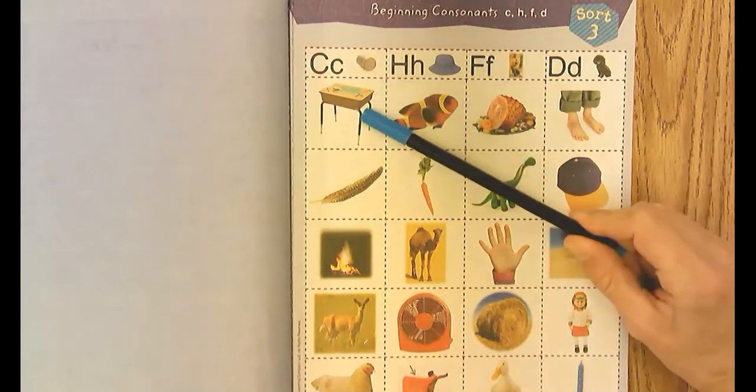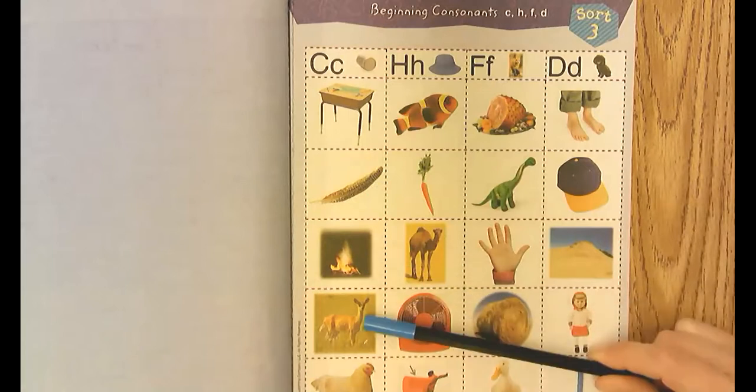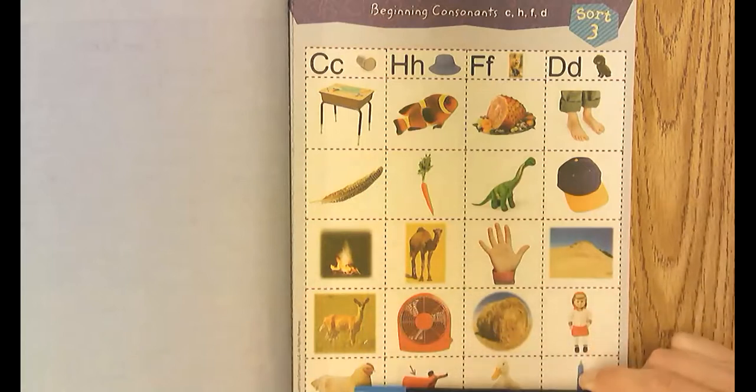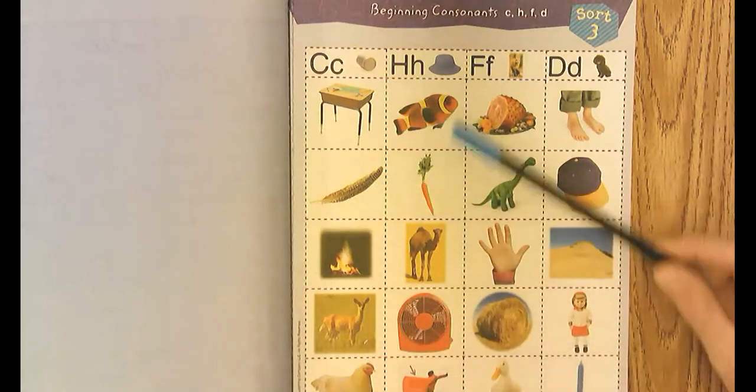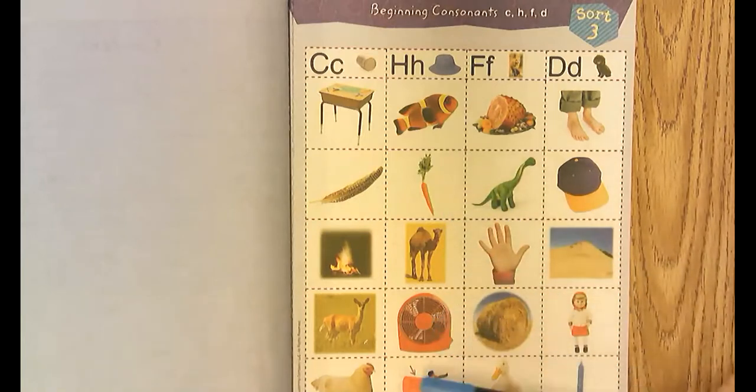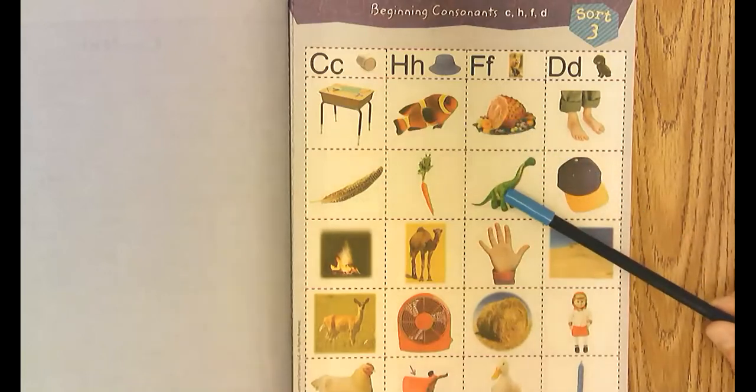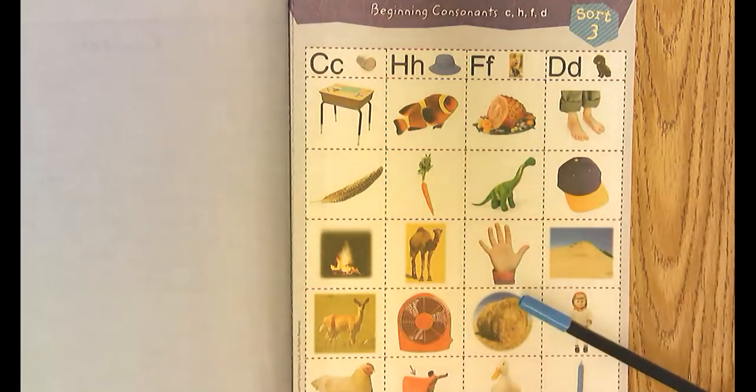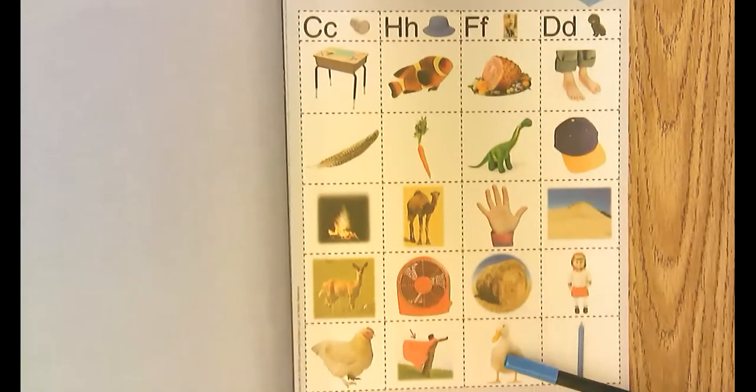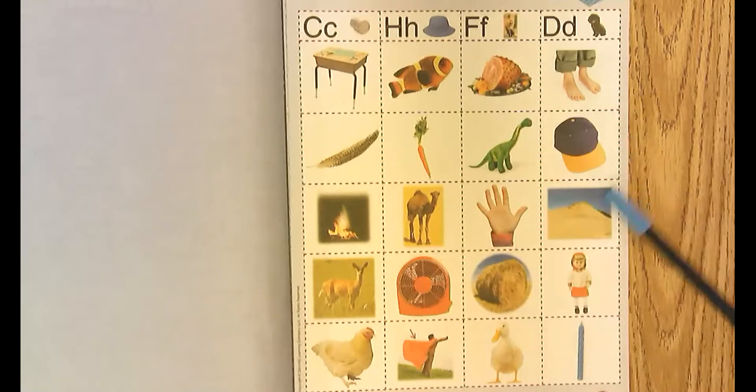Desk, feather, fire, deer, hen, fish, carrot, camel, fan, cake, ham, dinosaur, hand, hay, duck, feet, cap, hill, doll, and candle.